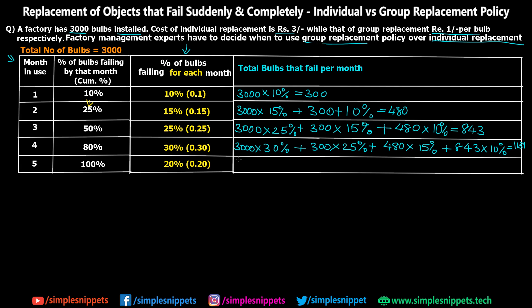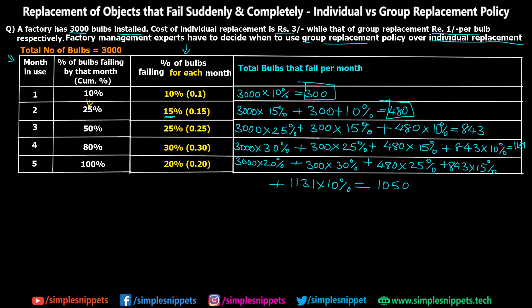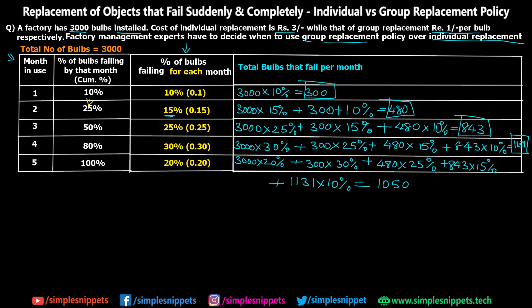For the fifth month: 3000 × 20%, plus the 300 bulbs replaced in month one are now four months old: 300 × 30%, plus the 480 bulbs replaced at end of month two are now three months old: 480 × 25%, plus the 843 bulbs replaced in month three are now two months old: 843 × 15%, plus the 1131 bulbs replaced in month four are now one month old: 1131 × 10%. This gives a total of 1050 bulbs failing in the fifth month.